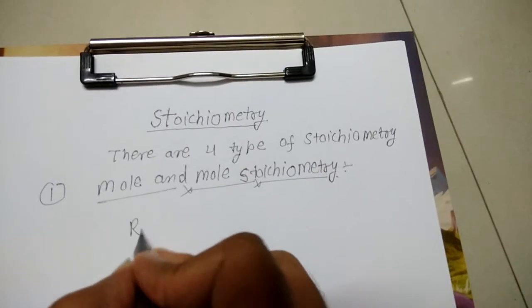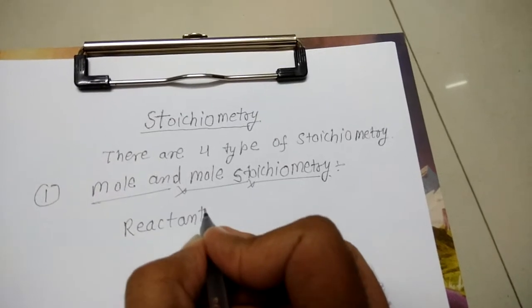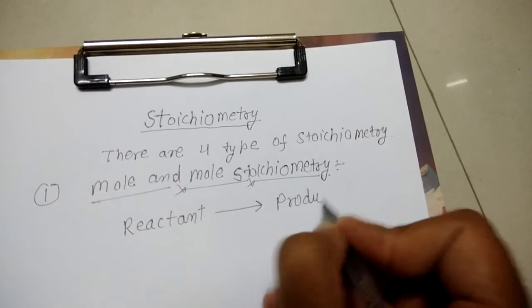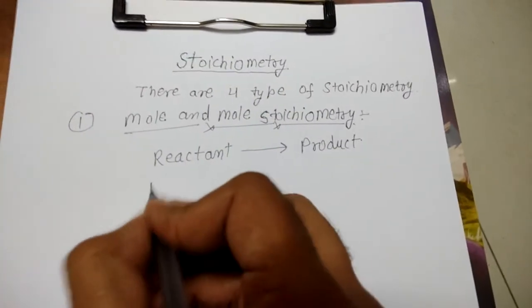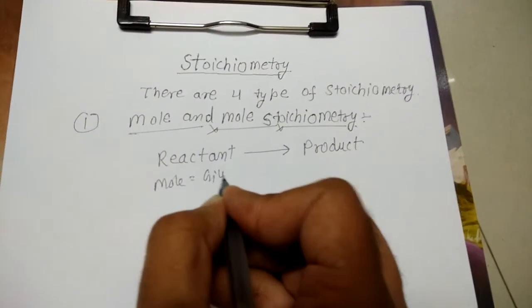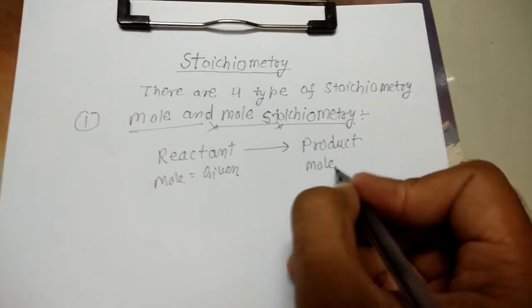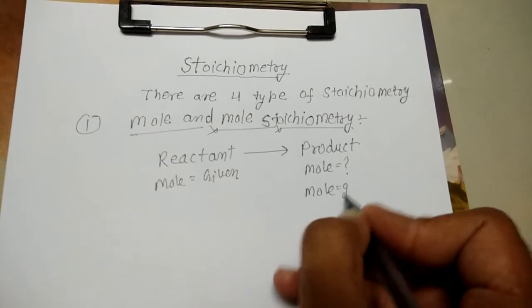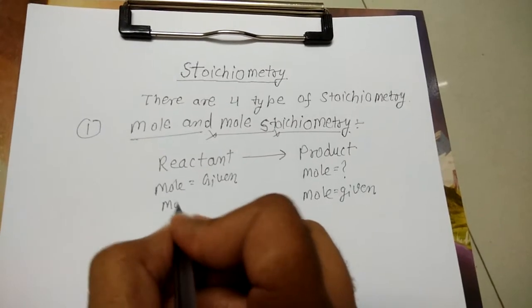In any reaction there are two parts - one is reactant and one is product. If the mole of reactant is given, then find the mole of product. And if mole of the product is given, then find the mole of reactant.